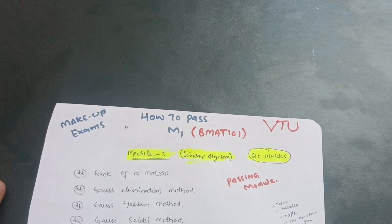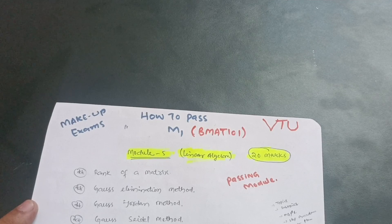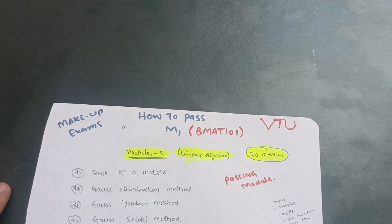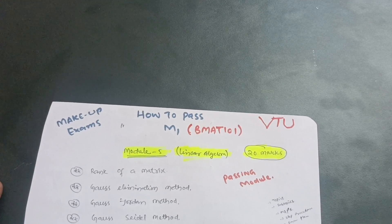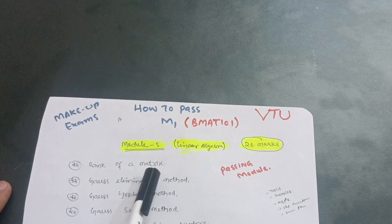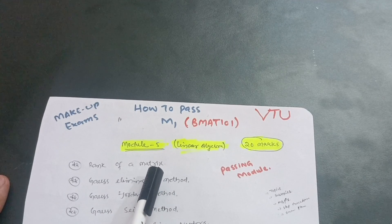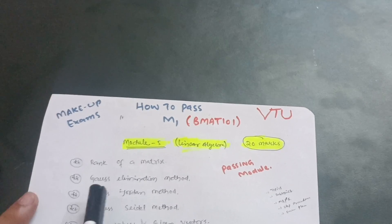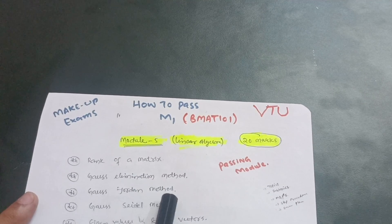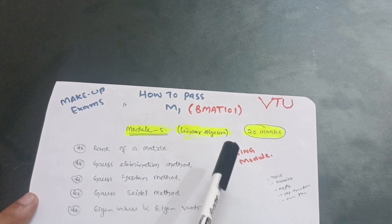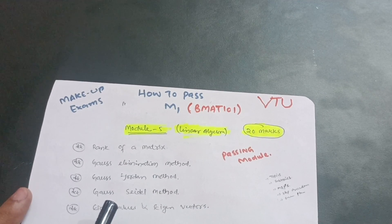Let me discuss a passing package. First, focus on Module 5, which is the linear algebra matrix part. You already encountered this matrix part in PU maths, and it is a simpler part where you can easily conquer 20 marks. The five concepts to cover are: rank of a matrix, Gauss elimination method, Gauss-Jordan method, Gauss-Seidel method, and eigenvalues and eigenvectors. I've already uploaded videos for these — links will be in the description box.